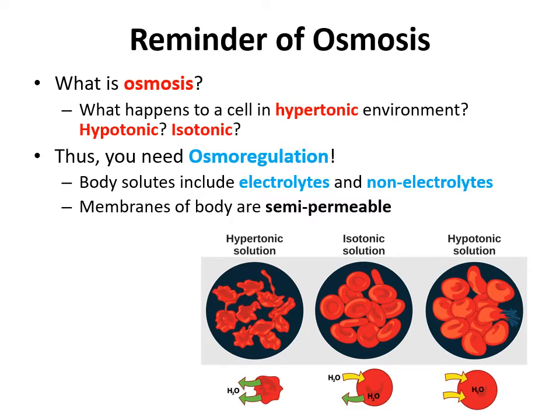This movement of water depends on the solute concentration around the cell or membrane. There are three different possible conditions for water movement. In a hypertonic environment — hyper meaning a lot, like when you're hyper and have a lot of energy — that's a high salt environment around the cell, and those cells lose water and shrivel up.